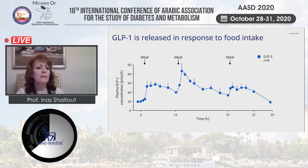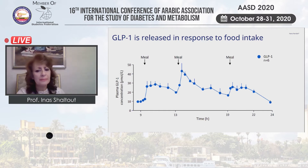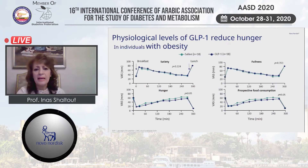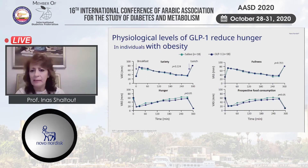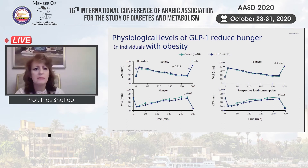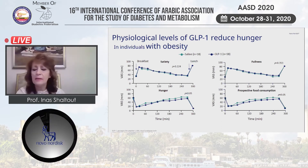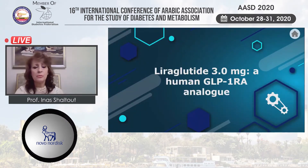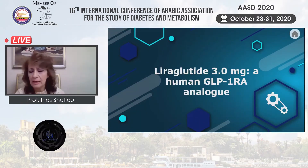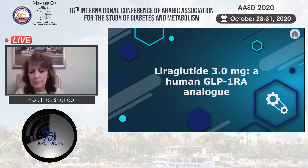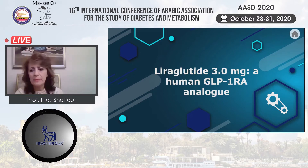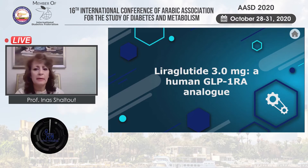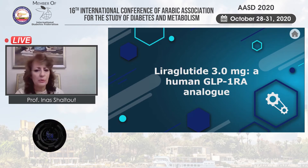Endogenous GLP-1 is secreted across the three main meals. It has a physiological action, but the physiological level reduces hunger sensation only a little bit in individuals with obesity. Exogenous GLP-1 receptor agonist liraglutide 3 mg is an analog to a human GLP-1 receptor agonist.